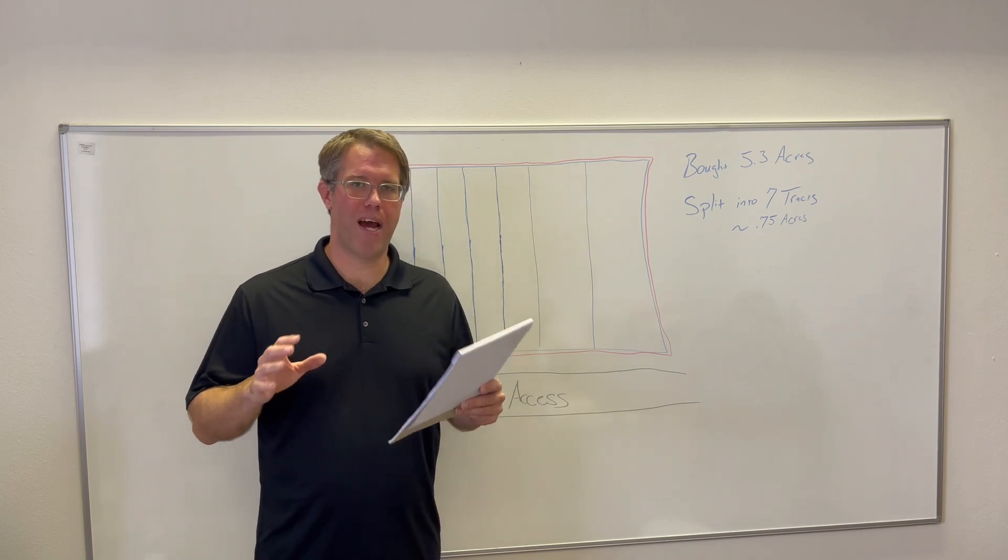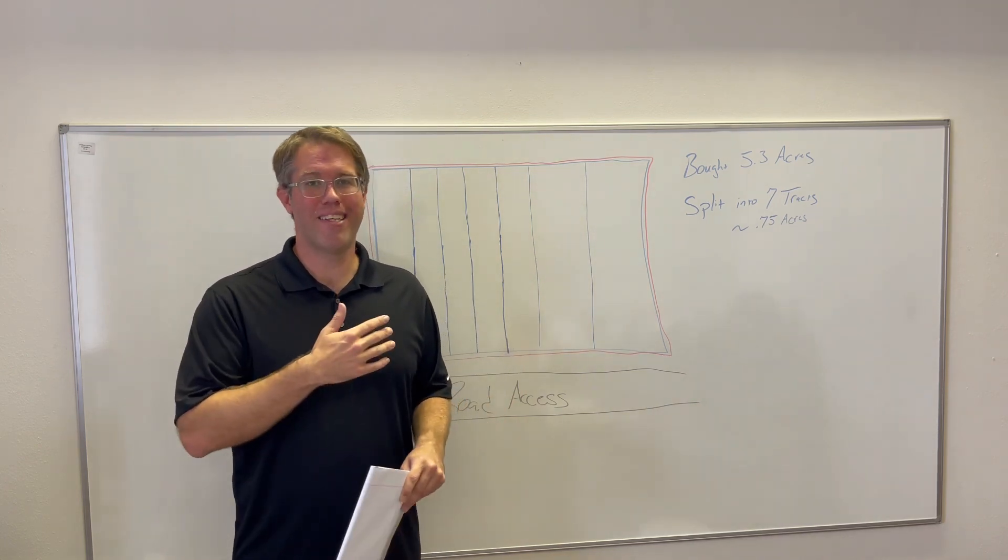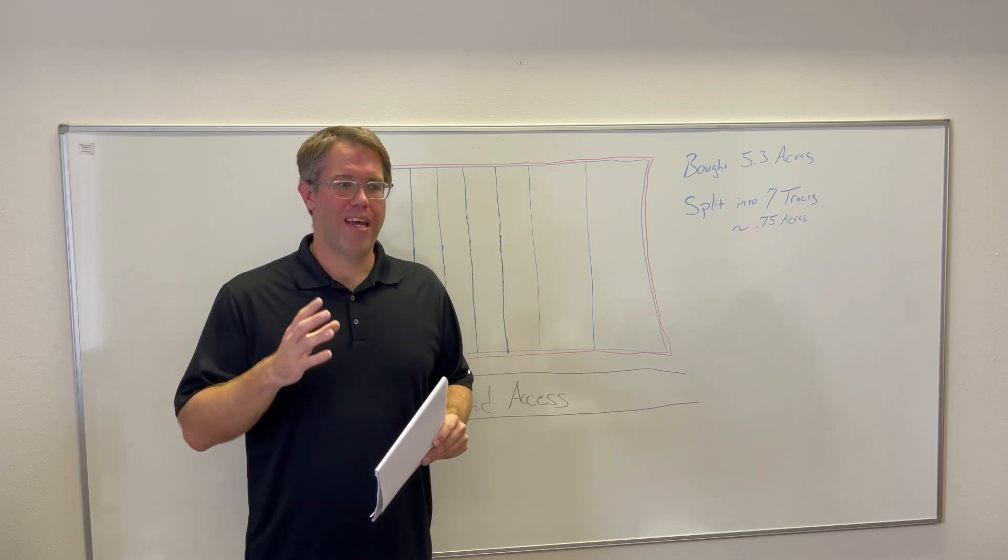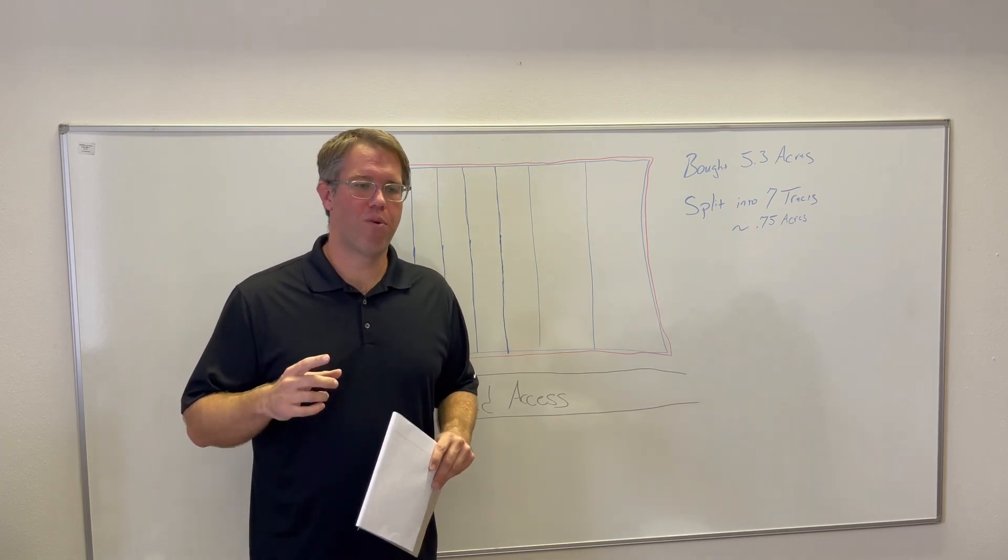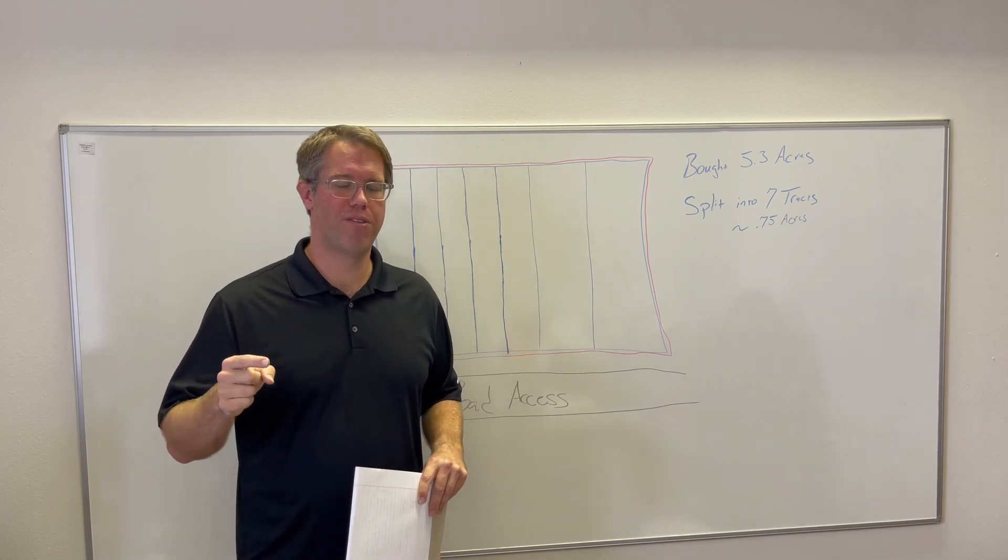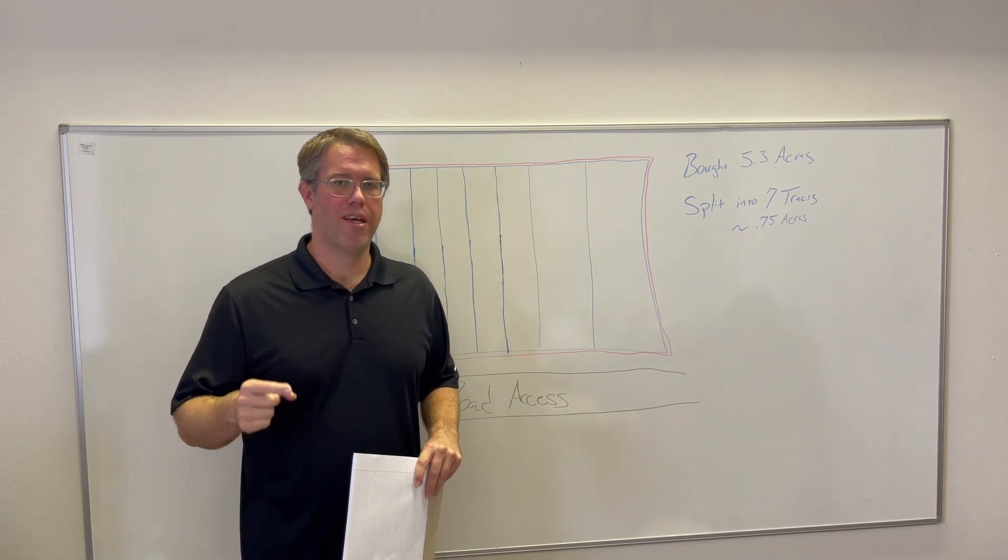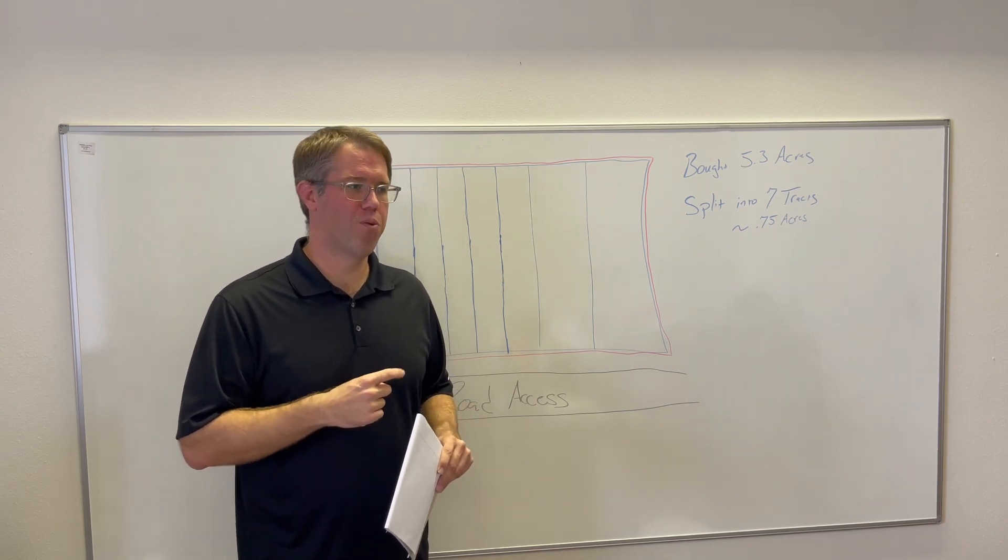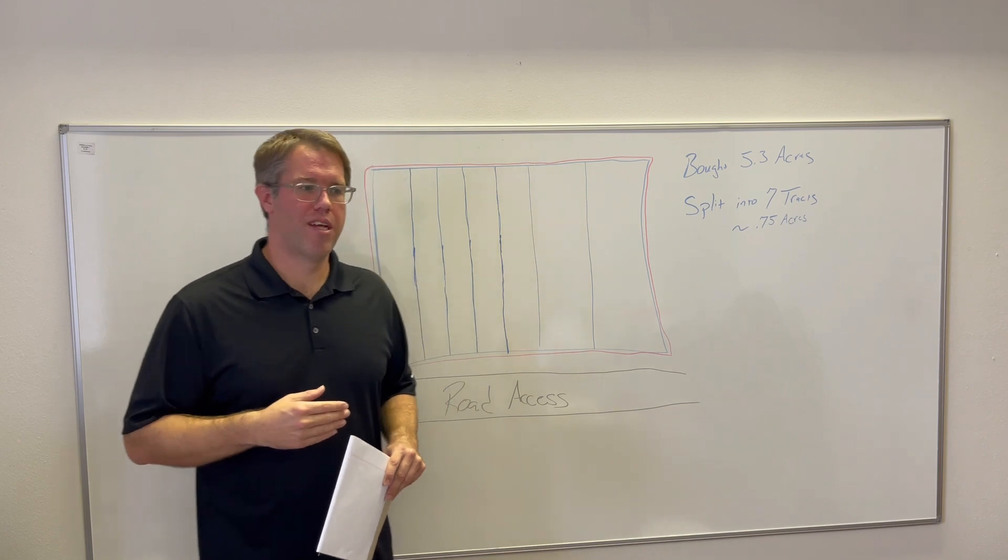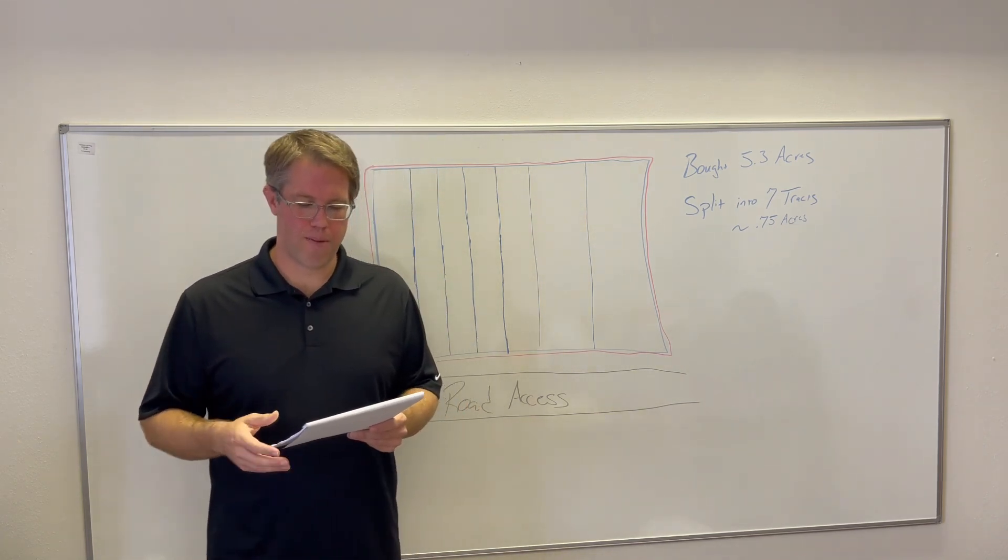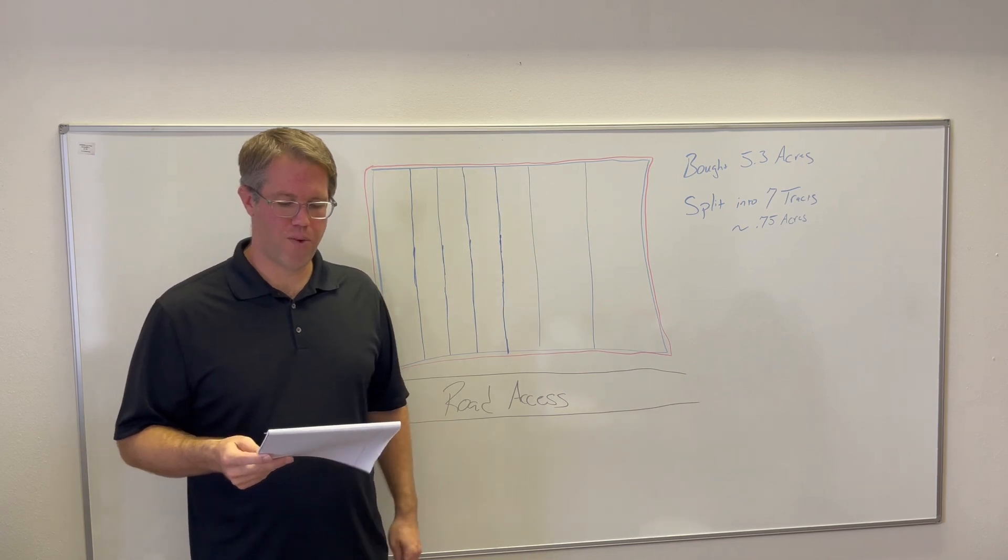My approach basically on this one is to buy a larger piece of property. In this case, it's 5.3 acres and then repackage that into smaller tracts. Now I always start with the ideal buyer, who I'm marketing this property towards, and then I repackage the lots around them.